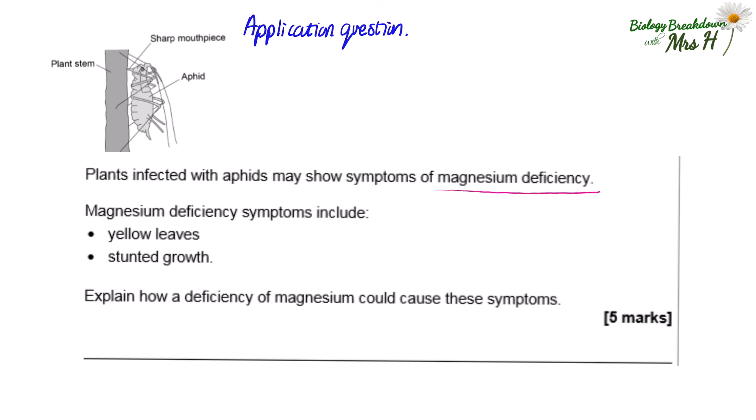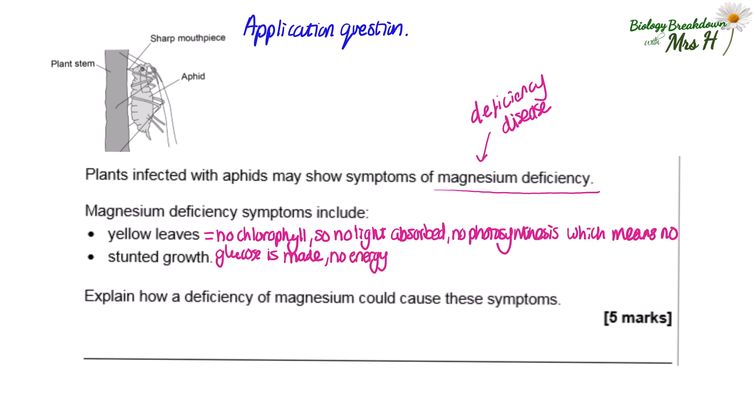You may have heard about magnesium deficiency in the topic on plant diseases, but this question is all about photosynthesis. The yellow leaves means there's no chlorophyll and where there's no chlorophyll, no light energy can be absorbed. That means no photosynthesis can happen, no glucose will be made, so there'll be no energy for growth, hence why there's stunted growth. Annotating the exam question in this way is a good skill to practice because now you have all the important points you need to be able to write out a proper answer on the lines you will be provided with.